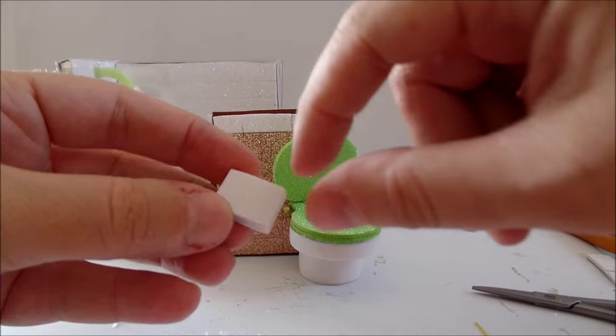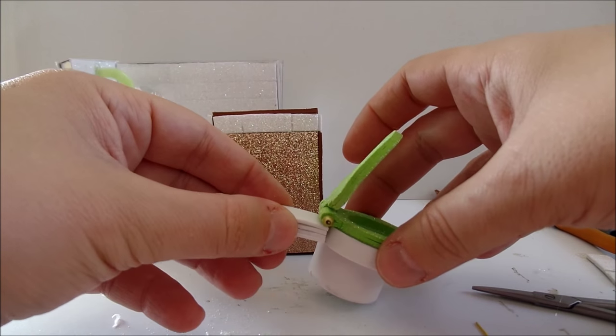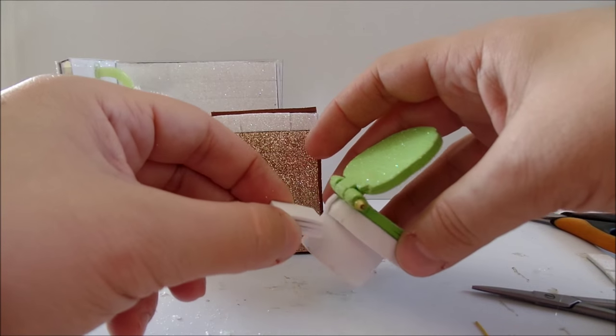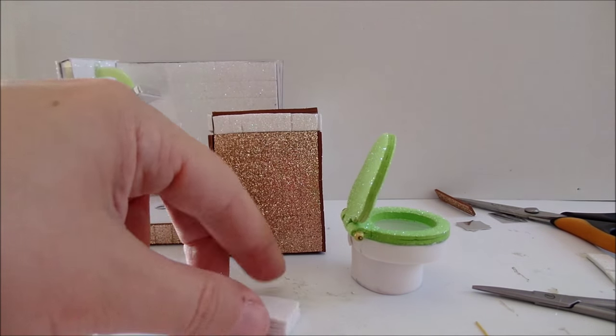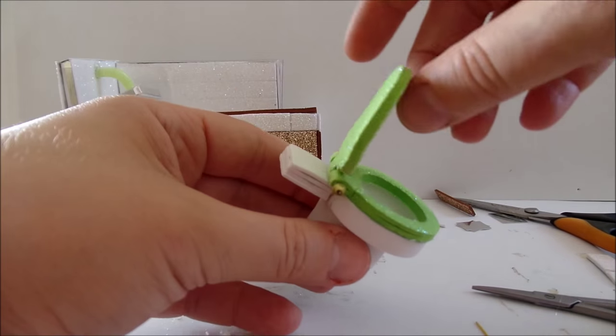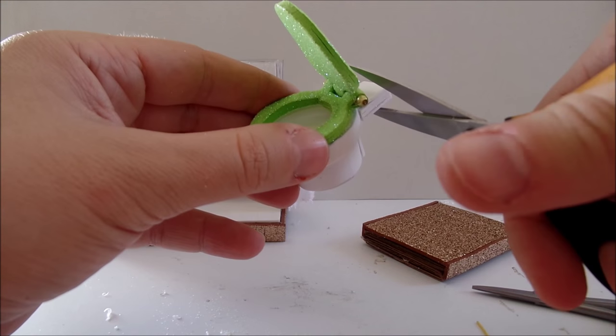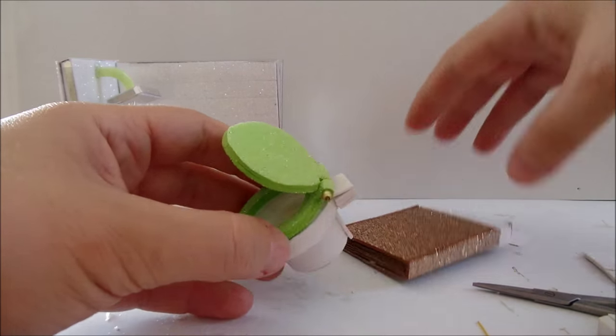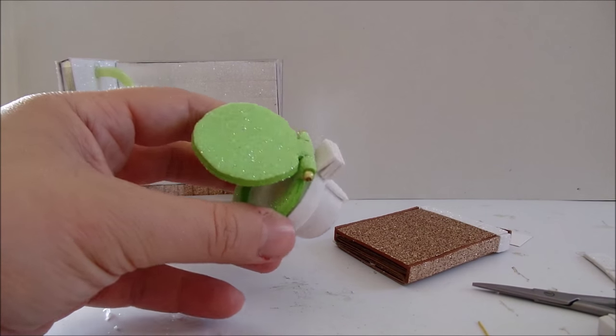I glued a few squares of foam here because I need space to connect to the wall. I attach it to the toilet. Adjust it. And glue it to the wall.